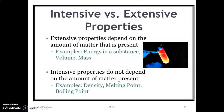The next important point is intensive and extensive properties of thermodynamics. An extensive property depends on the mass of the system — examples include energy, volume, and mass. An intensive property does not depend on the mass of the system — examples include temperature, density, and melting point.